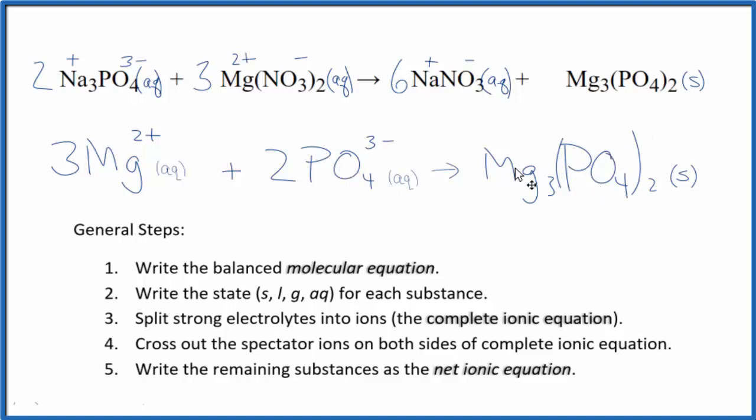This is a neutral compound. If you count the atoms up, they're the same on both sides as well. This is Dr. B with the balanced net ionic equation for Na3PO4 plus Mg(NO3)2. Thanks for watching.